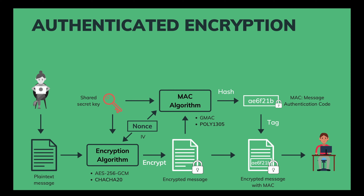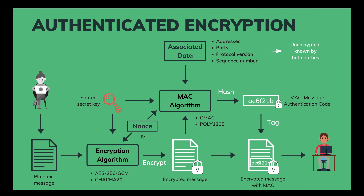In TLS 1.3, besides the encrypted message, we also want to authenticate some associated data, such as the addresses, the port, the protocol version, or the sequence number. This information is unencrypted and known by both communicating parties, so the associated data is also an input of the MAC algorithm. Because of this, the whole process is called Authenticated Encryption with Associated Data, or AEAD.